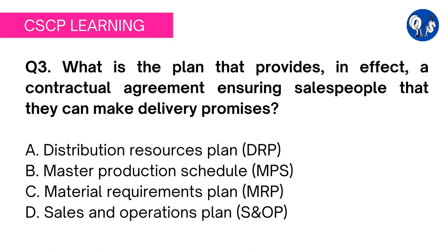MPS is the process that helps manufacturers plan which products and related quantities to produce during a certain period. This is the information required by salespeople to make delivery promises. It is quite logical that if salespeople are unaware of the production schedule, they will not be able to schedule their activities. This is the correct answer.